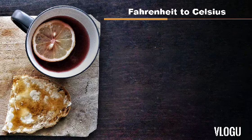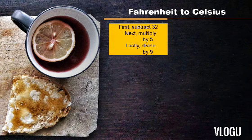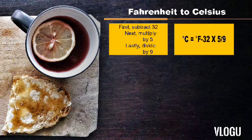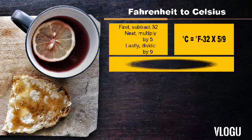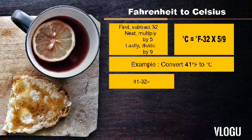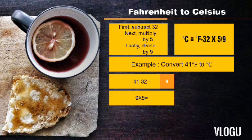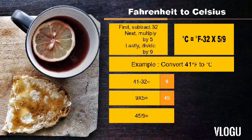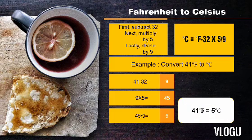How will we convert Fahrenheit to Celsius? The formula is: degree Celsius equals degree Fahrenheit minus 32, times 5, divided by 9. Let's have an example: convert 41°F to Celsius. First, 41 minus 32 equals 9. Then 9 times 5 equals 45. Then 45 divided by 9 equals 5. So 41 degrees Fahrenheit is equal to 5 degrees Celsius.